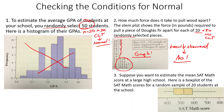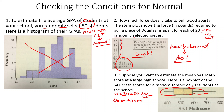Next: suppose you want to estimate the mean SAT math score at a large high school, and here is a box plot of the scores for a random sample of 20 students. Again, n equals 20, which is less than 30, so no CLT. But looking at the box plot, there are definitely no outliers. One side is a little longer than the other, but it's all pretty evenly spaced — that's not a deal breaker. We say it's not strongly skewed, so the normal condition is met.